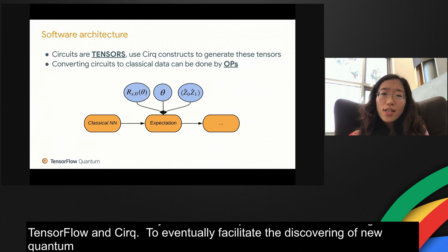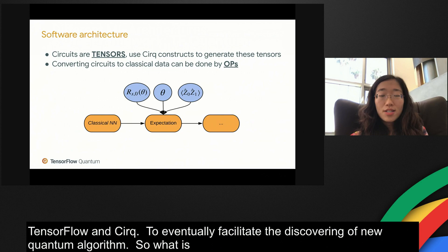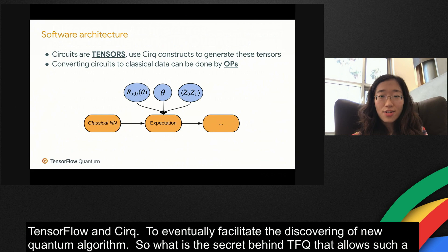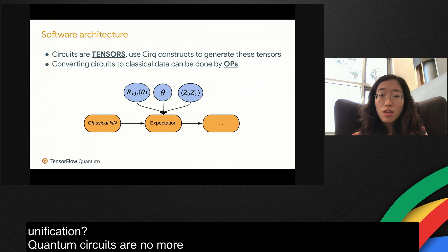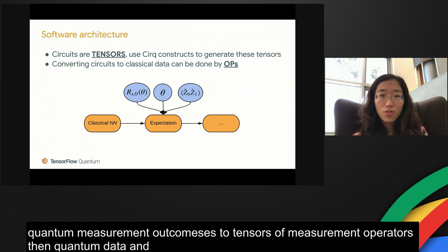What is the secret behind TFQ that allows such a unification? Fundamentally speaking, quantum circuits are no more than tensors, just like classical neural networks. If we can seamlessly convert quantum circuits to tensors that are compatible with TensorFlow data structures, and convert quantum measurement outcomes to tensor contractions of measurement operators, also specified by tensors or so-called ops, then quantum data and quantum machine learning architectures become part of an overall computational graph, and easily integrable with classical machine learning agents.